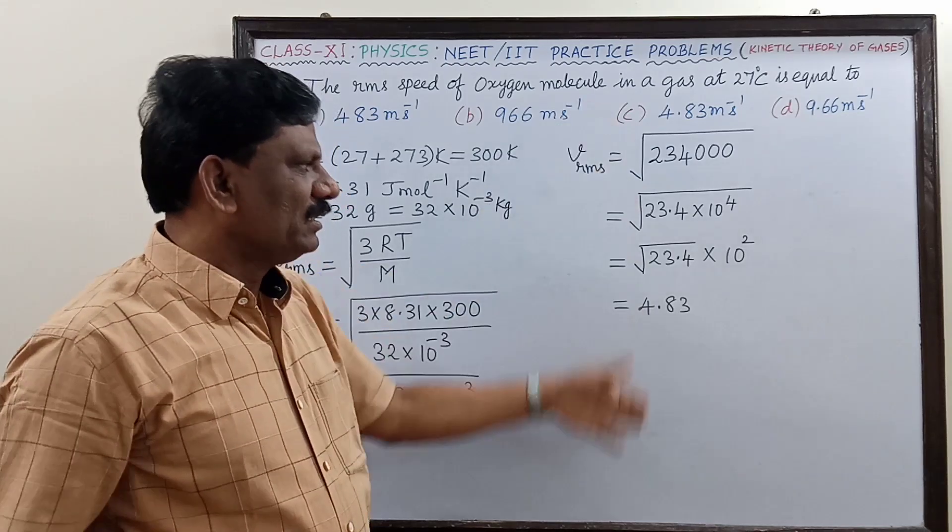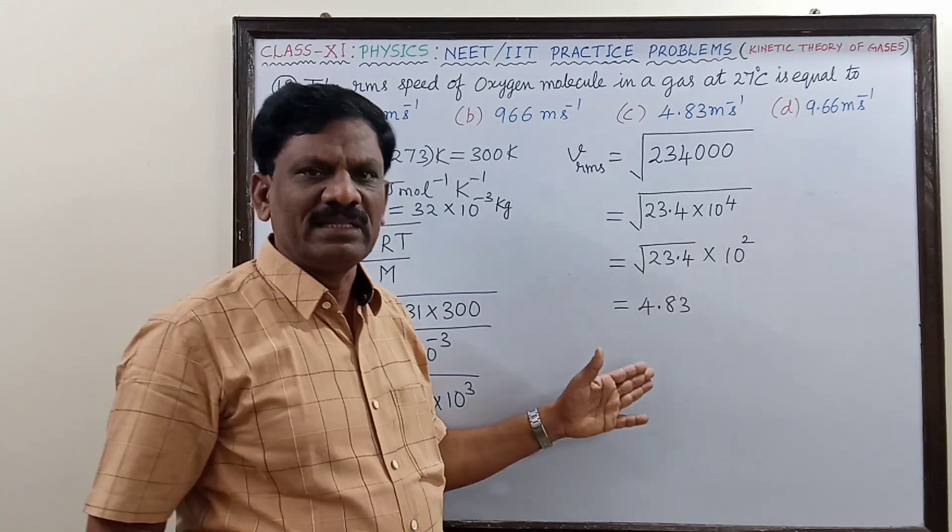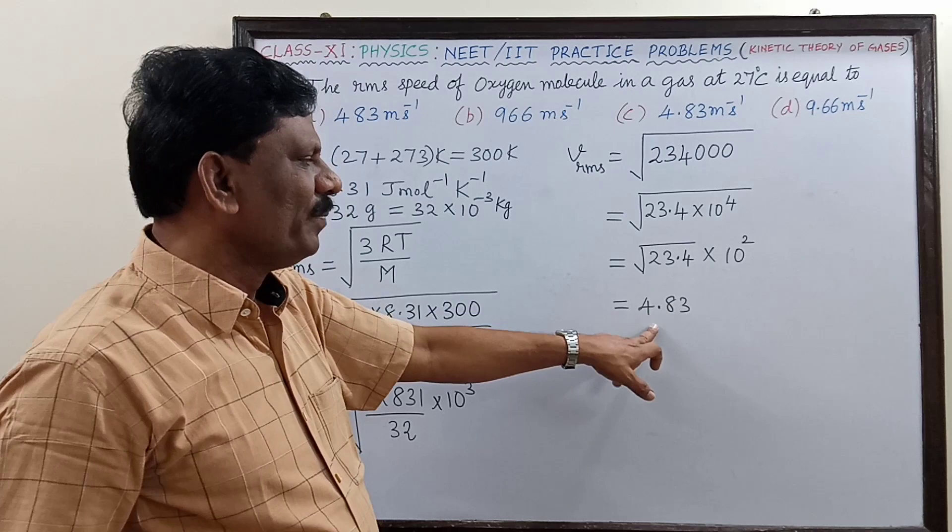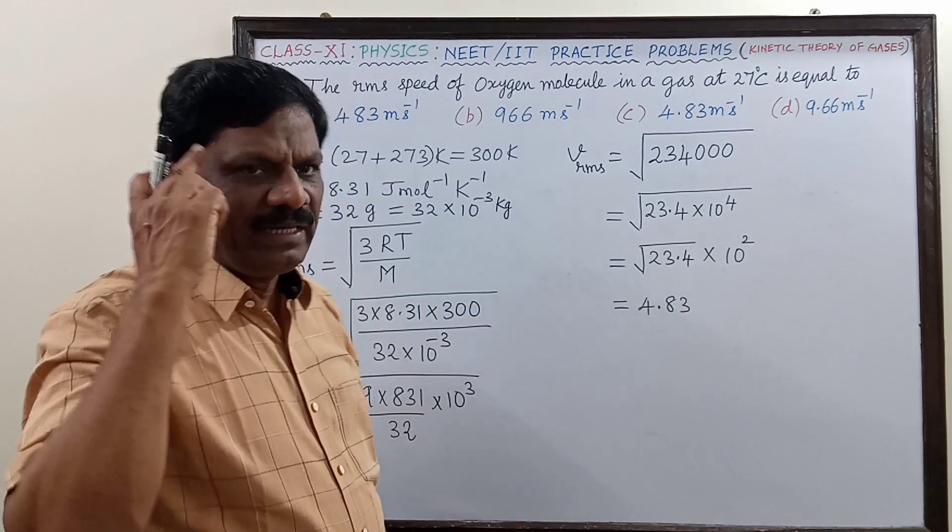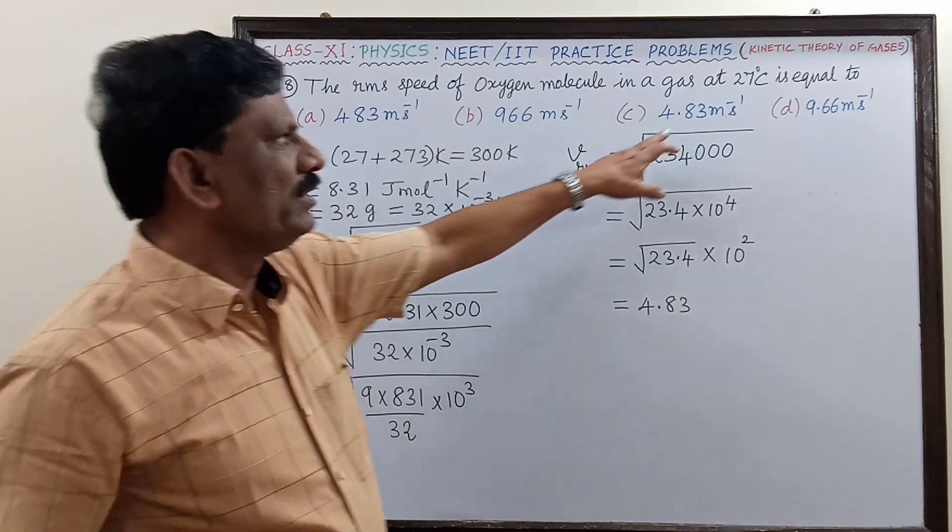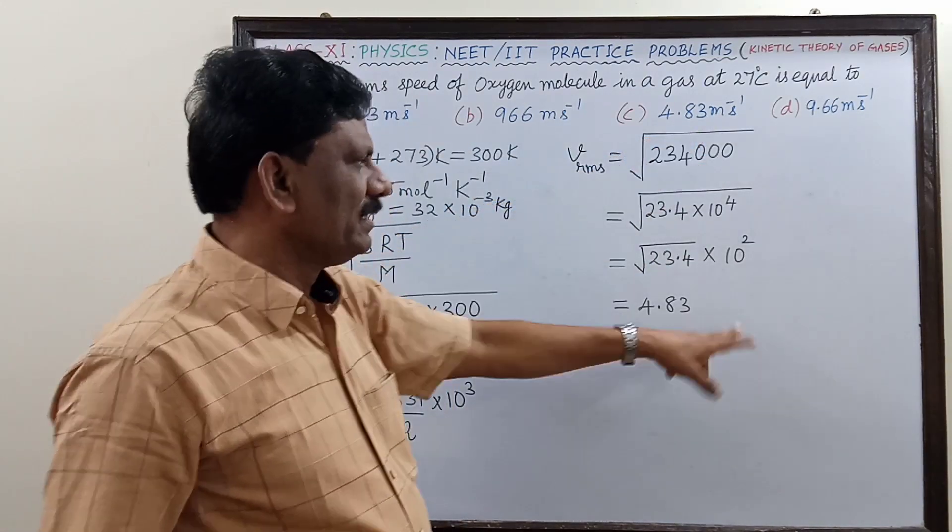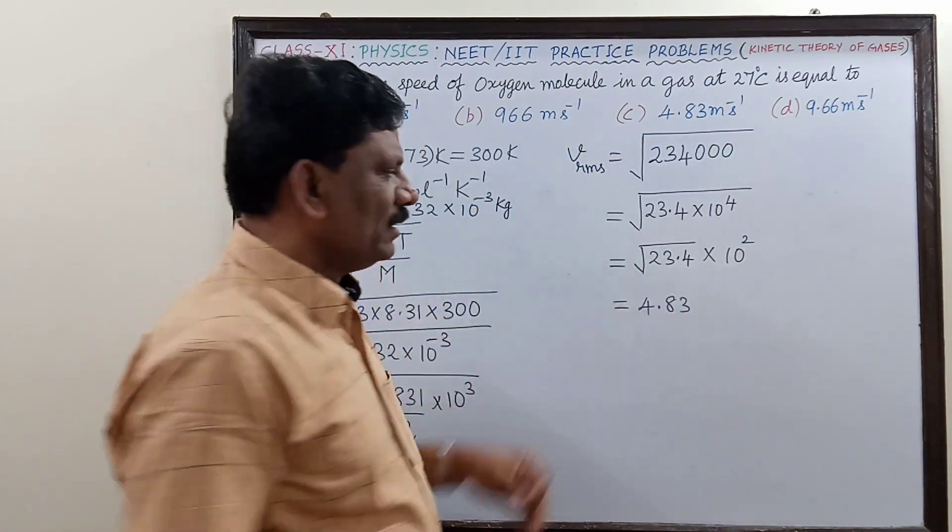Now the shortcut calculation I am writing myself. The square root value of 23.4 is 4.83. Quickly your mind should not go to option C because there is another 10 power 2, so this is into 10 power 2.